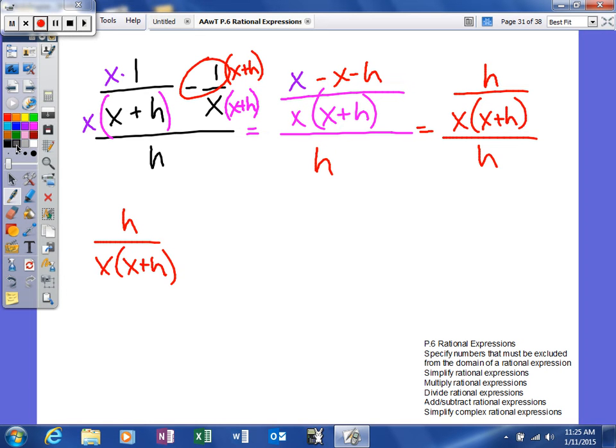So the reciprocal of h is 1 over h, and if I can factor anything, I would, but I can't, but I can simplify common factors. Multiply the numerators together to get your numerator. Multiply the denominators together to get your denominator. And there you go.